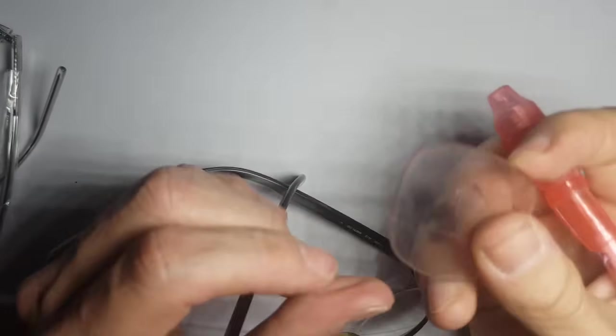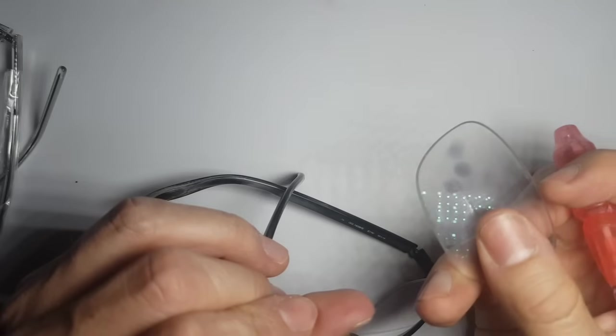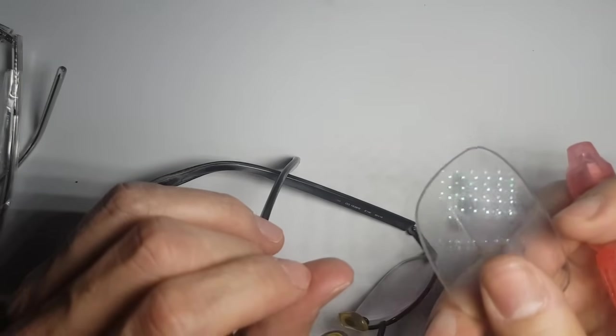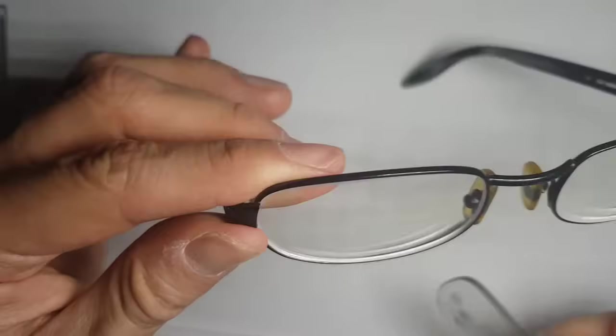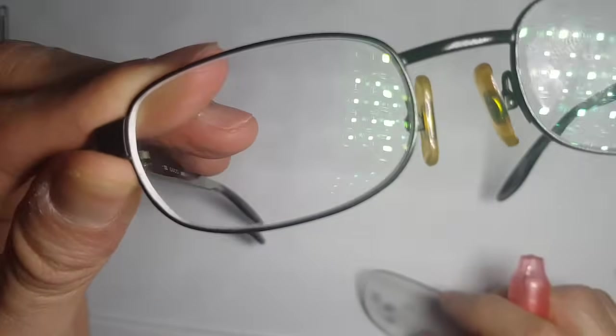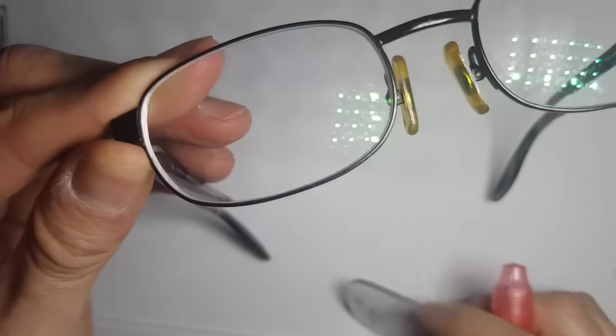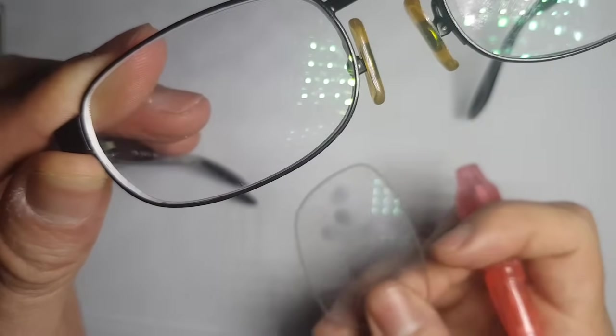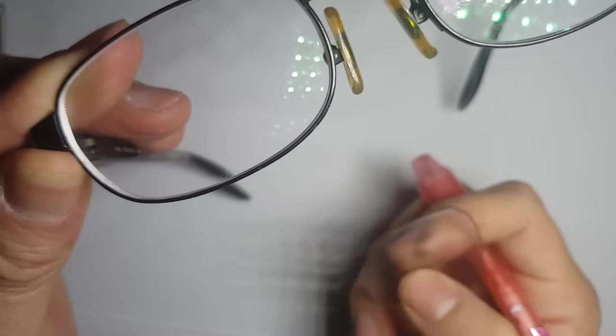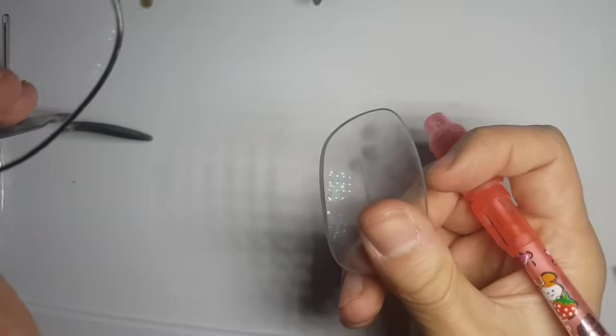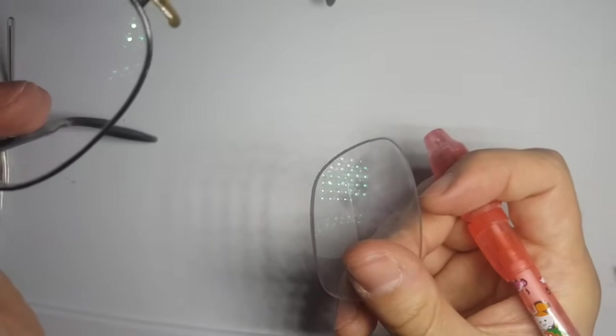And as you can see, the lens got darker. That means these lenses don't have UV protection. Why? Because it let the UV light go through, and it hit the surface, and the surface got dark.